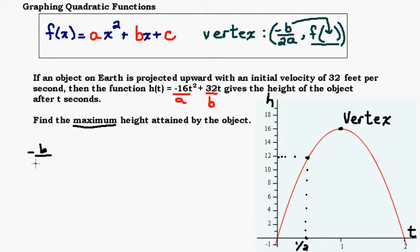The opposite of b over 2a, from the graph you can probably guess it's going to come out to be 1. You may not have a graph available to you. Our b value is 32, so we have -32 over 2 times a is -16. We get -32 over -32, which is 1.